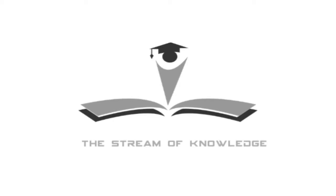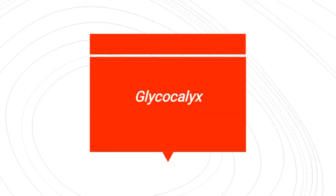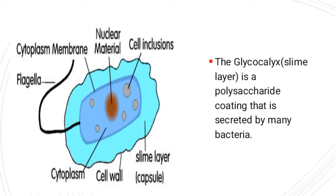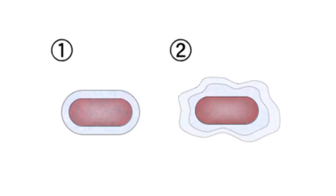Bismillahirrahmanirrahim. Assalamu alaikum everyone, welcome to Stream of Knowledge. Today we will learn about glycocalyx. What is glycocalyx? As the name suggests, 'glyco' means glucose and 'calyx' is the coating, meaning the glucose coating or the polysaccharide coating. Polysaccharide is the polymer of glucose, hence the polysaccharide coating is called glycocalyx.